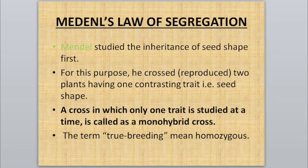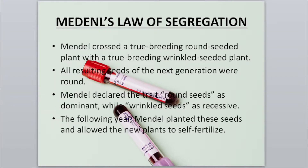When Mendel crossed a true breeding round-seeded plant with a true breeding wrinkled-seeded plant, the seeds produced in the next generation — the First Filial generation — were all round. This told us that round seed shape is the dominant trait in pea plants, while wrinkled seed shape is the recessive trait.